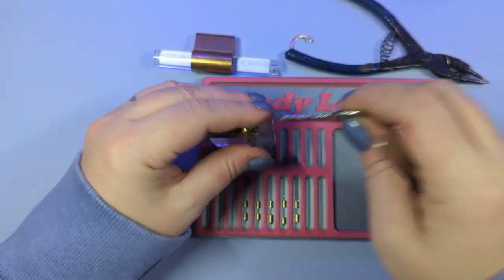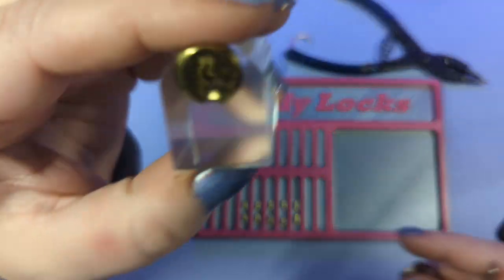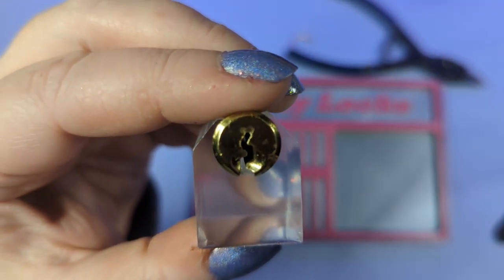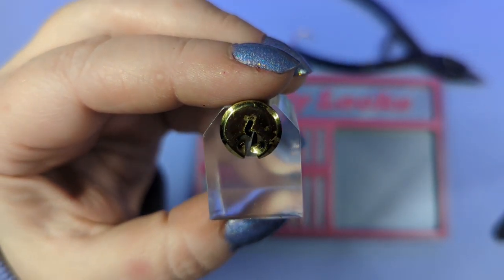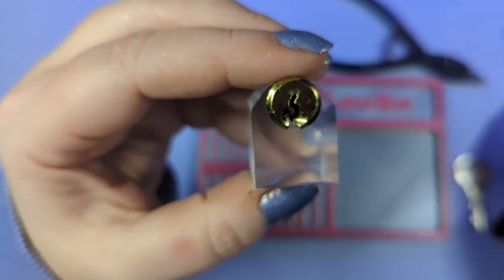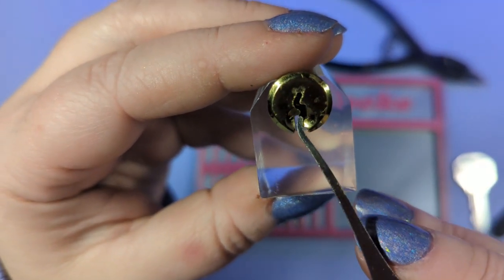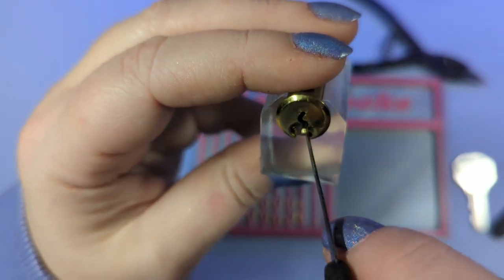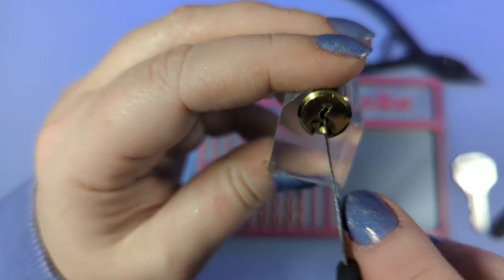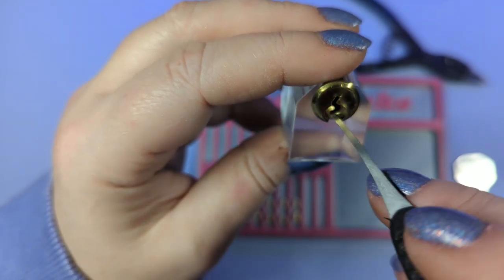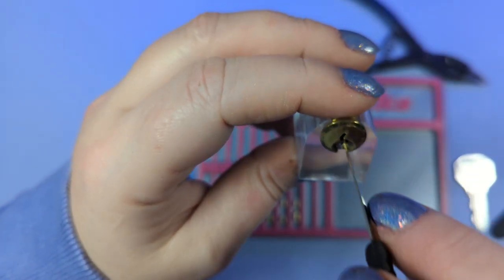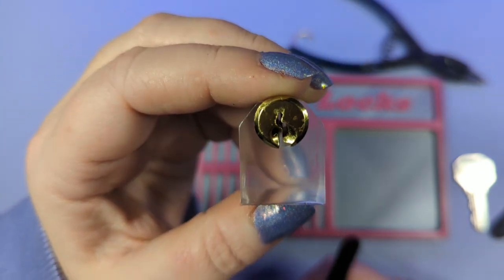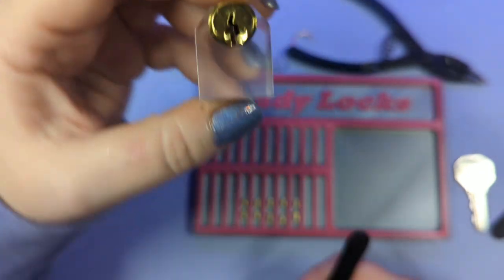This paracentric keyway can really play games with you when trying to pick. This circle right here really can get annoying if your pick can't go through the warding and push straight up on these pins. Then you go around like this and it's super annoying, but it's also what makes it a little bit of a challenge and a whole lot of fun.